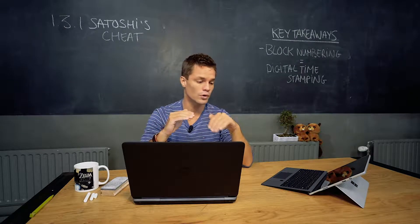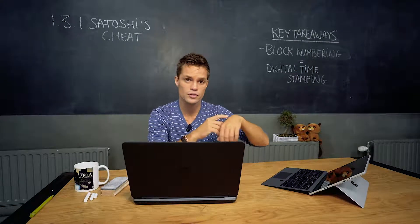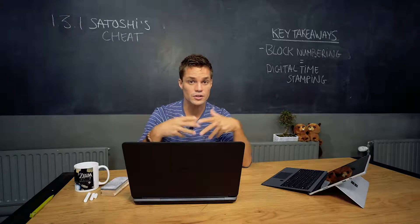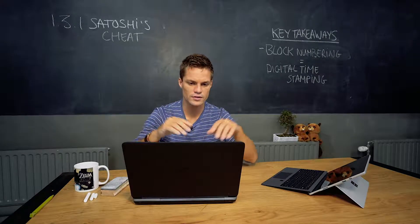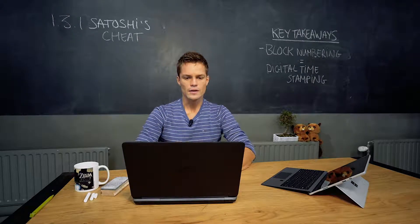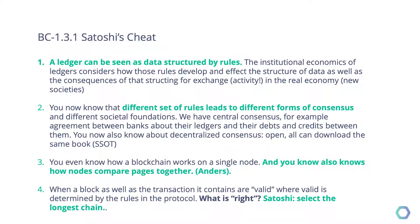It's neutral — no gender preferences, no skin color preferences, no religion, no sexual preferences. So we have a new form of ledger with a new form of rules without an authority, which can also start programming itself. Quite interesting.